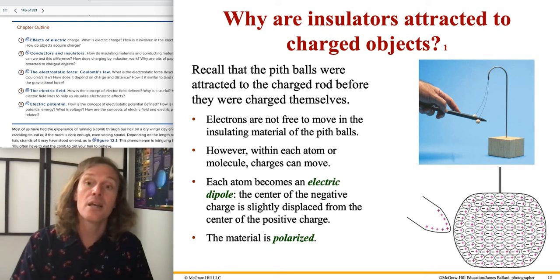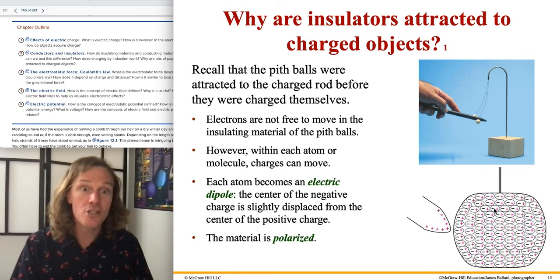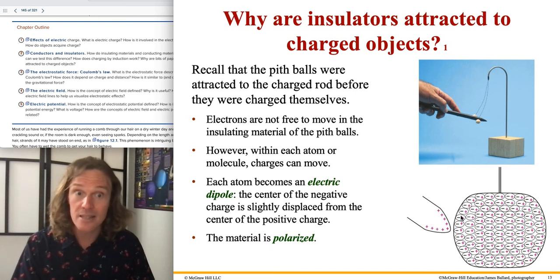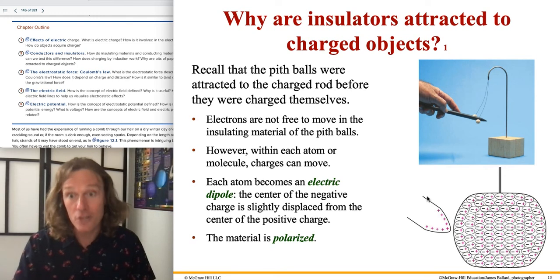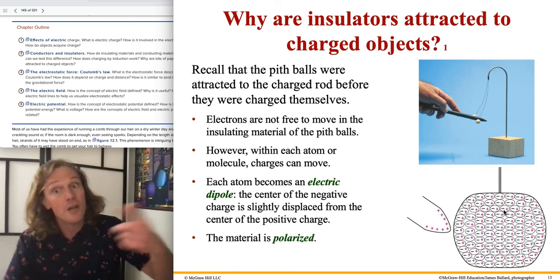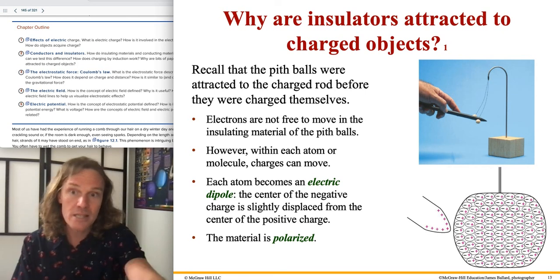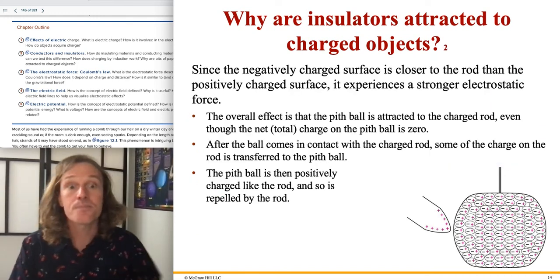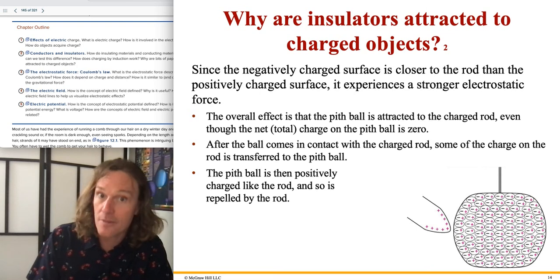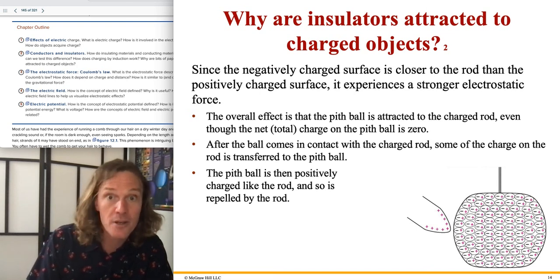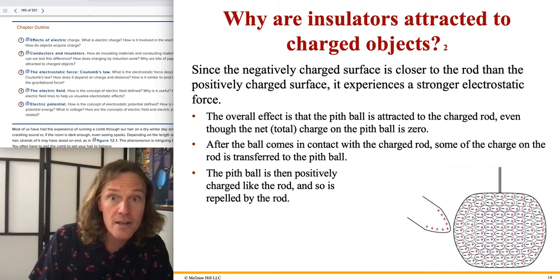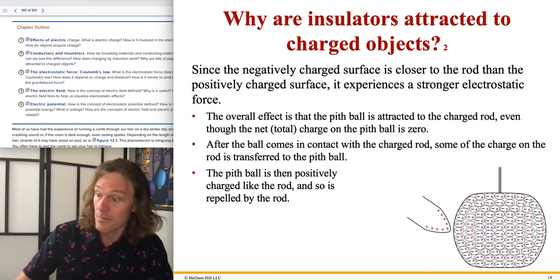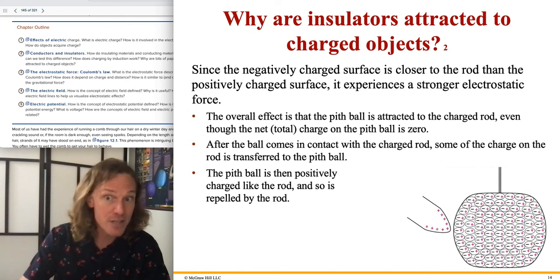This is not an excess-charge situation — the insulator is still neutral overall. But induced polarization always creates an attractive force, because the polarization is created by the external charge itself, and the induced dipoles are always oriented to be attracted to it. Since the negatively charged surface is closer to the rod than the positively charged surface, it experiences a stronger attractive electrostatic force. The pith ball is attracted even though its net charge is still zero.